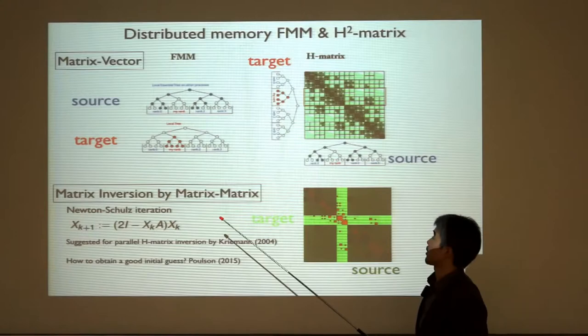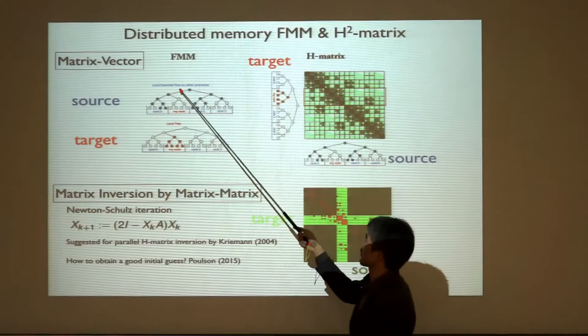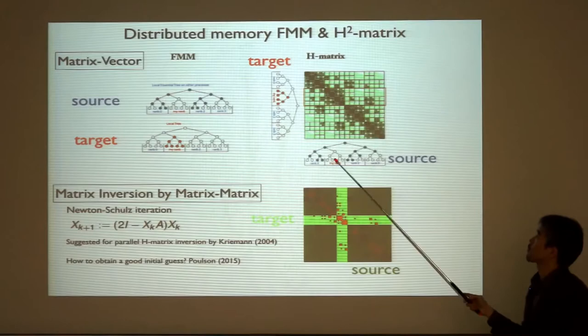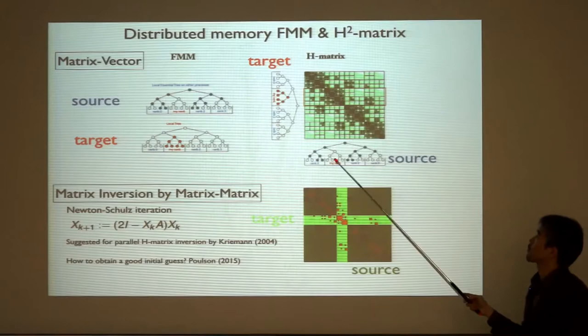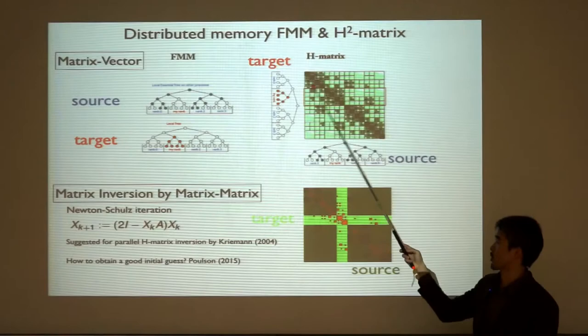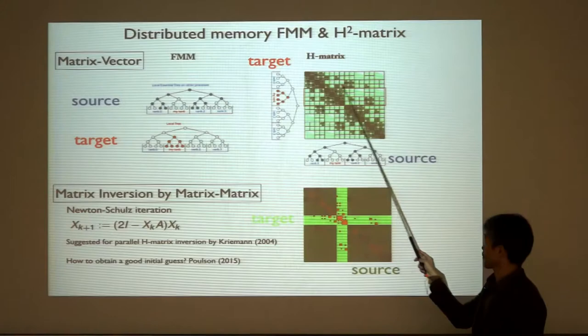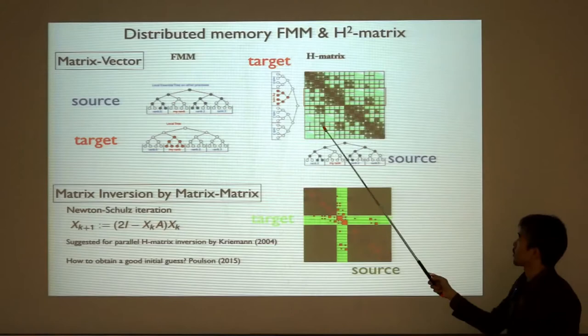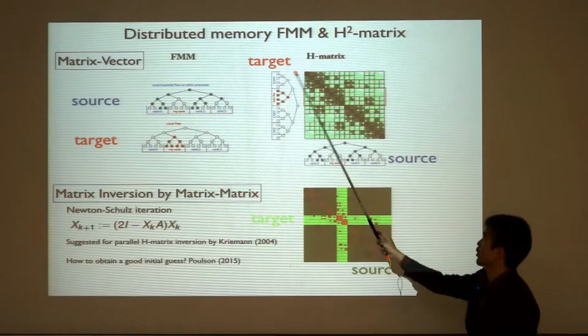The final slide addresses what happens to the matrix version in parallel or distributed memory. In the Fast Multipole Method, you don't actually store the matrix at all — you only have the two trees on both sides. The H-matrix, by contrast, stores something like the tensor product between these two trees, with one tree spanning rows and the other spanning columns.